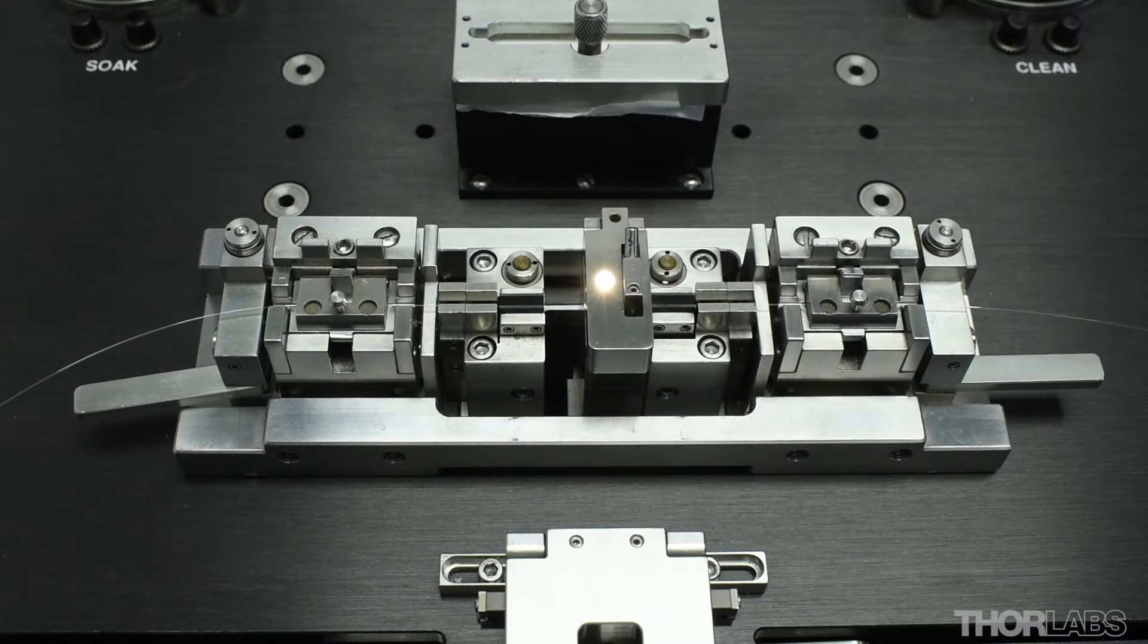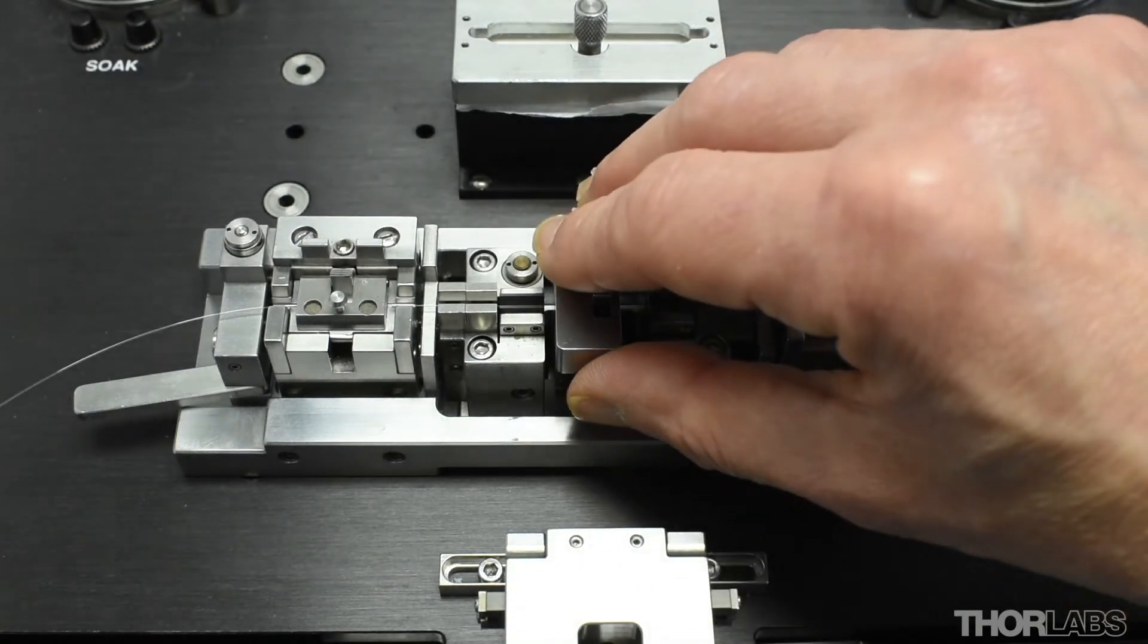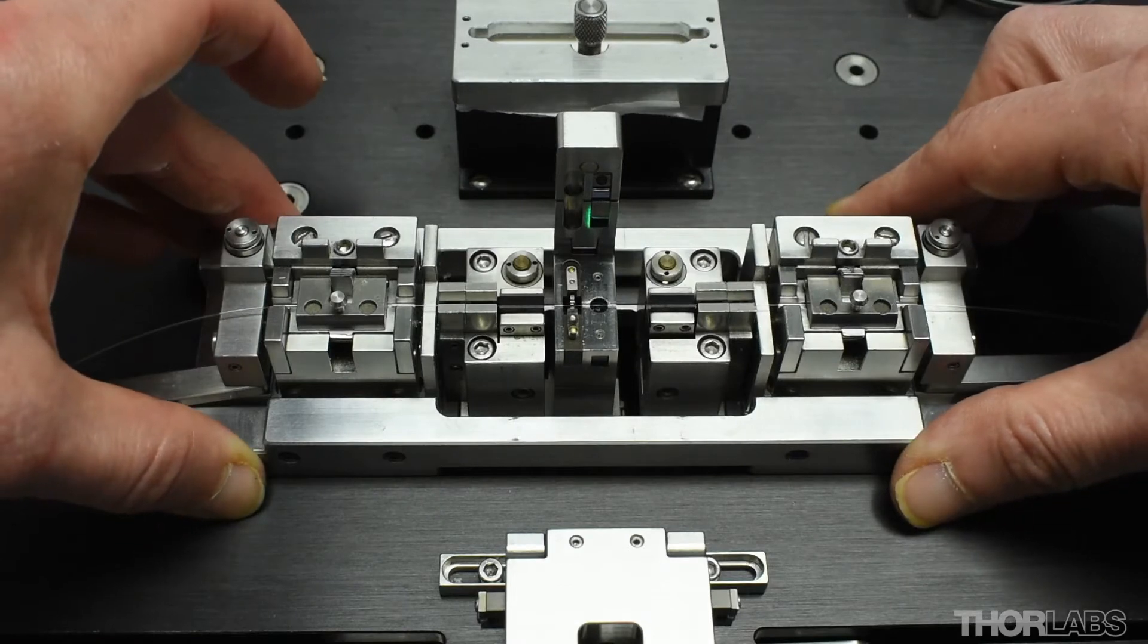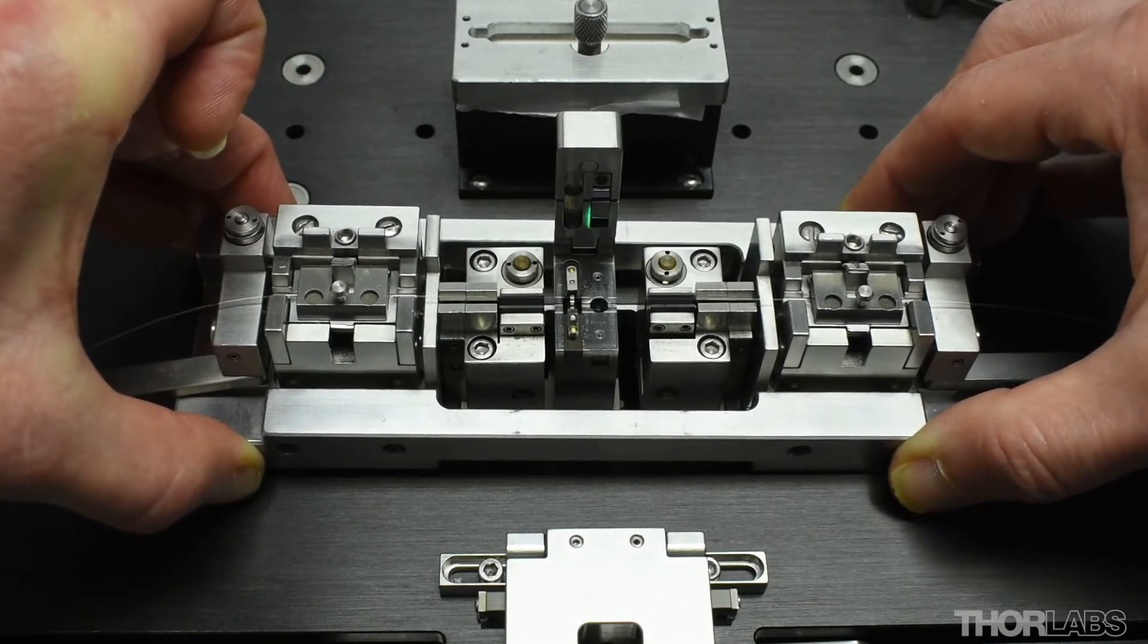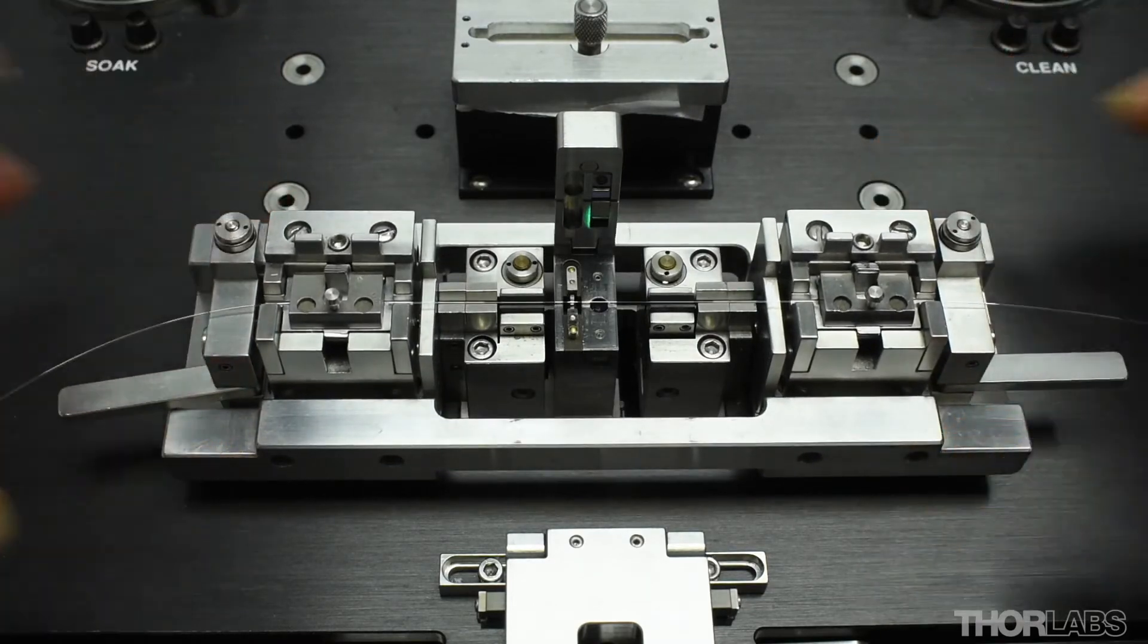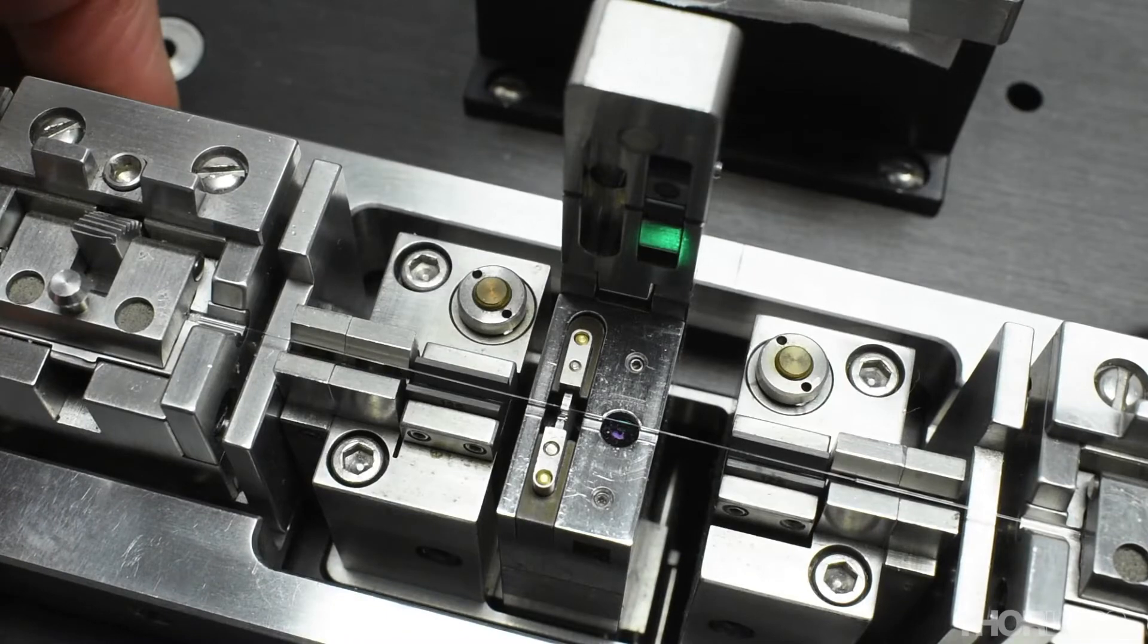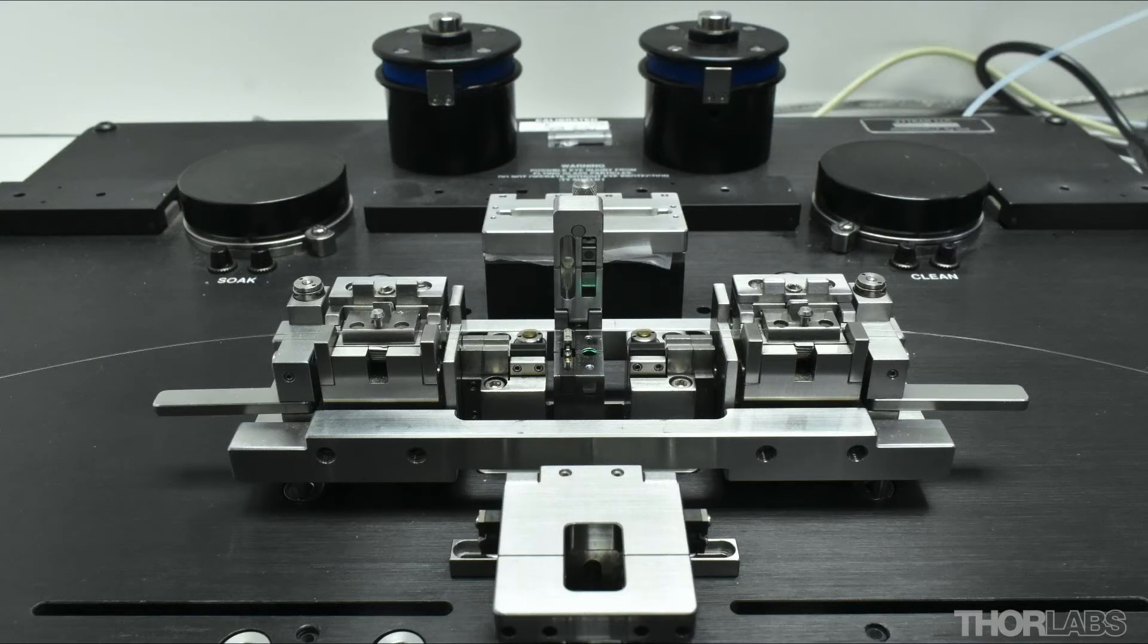Using the machine in accordance with best practice will result in high strength splices. Once the splice is completed, it is vital that the fibres are unloaded from the splice station correctly to avoid the bare glass touching the filament. First lift the left and then the right hand side of the transfer jig. If you have not yet watched the video on how to load and unload fibres from the splice station, click the annotation or see the link in the description below to learn more.